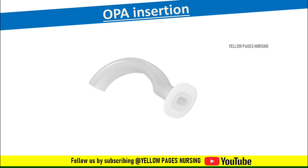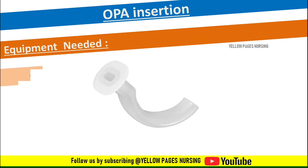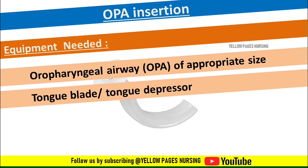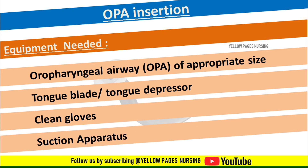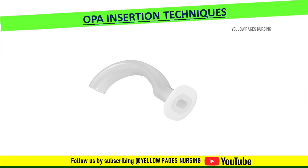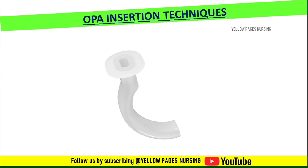For oropharyngeal airway insertion, the following equipment is needed: oropharyngeal airway of appropriate size, tongue blade or tongue depressor, clean gloves, and suction apparatus.